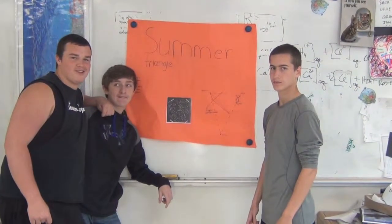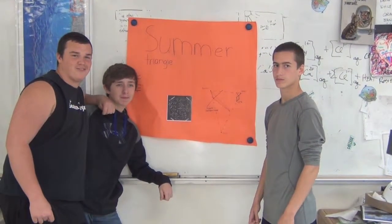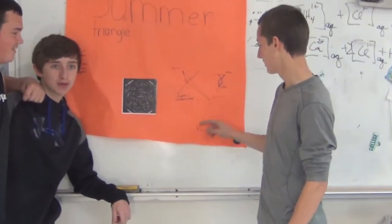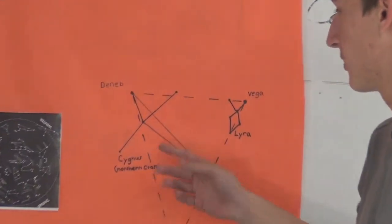We're doing the Summer Triangle, also known as the Navigator Triangle. This is the triangle. Its main stars are Deneb, Vega, and Altair, with constellations connected to it.